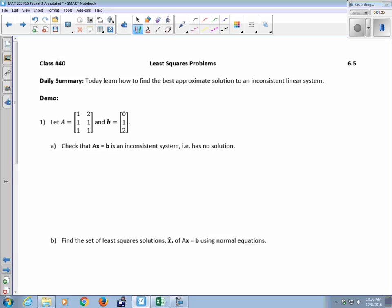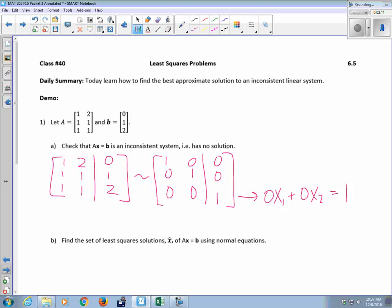So, first we're going to show that this thing is inconsistent, this equation AX equals B. So I'm just going to augment my A with 0, 1, 2 with my B, row reduce, and I get 1, 0, 0, 0, 1, 0, augmented with 0, 0, 1. What tells me that this is inconsistent? Yeah, that third row, if you translate that back to an equation, remember it says 0X1 plus 0X2 equals 1, this is impossible. So this is inconsistent.